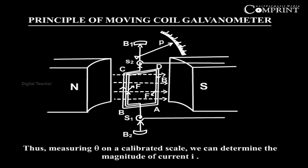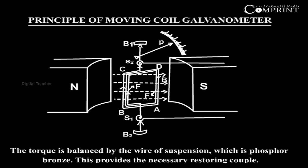Measuring theta on a calibrated scale, we can determine the magnitude of current I. The torque is balanced by the wire of suspension which is phosphorus bronze. This provides the necessary restoring couple.